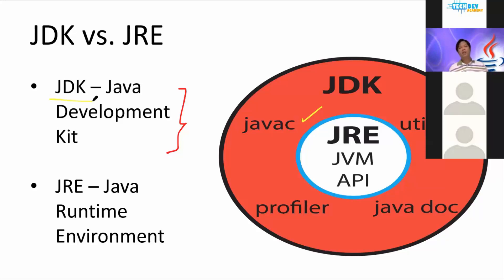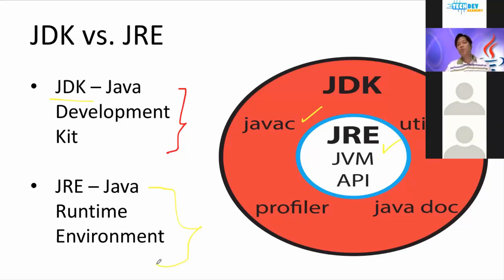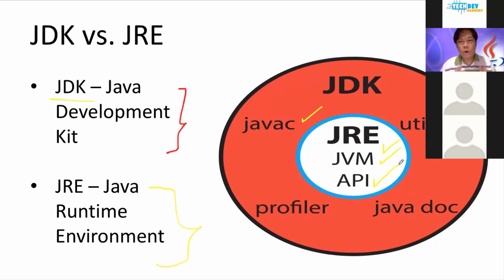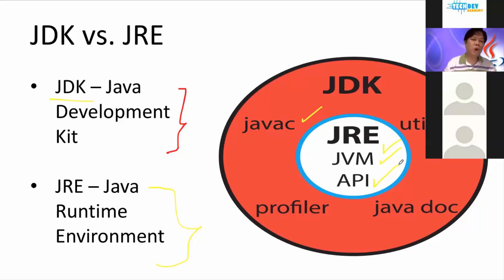If you're not a developer — if you're just an end user — all you need is to install the JRE. The JRE stands for Java Runtime Environment and it only has two components inside: the JVM and the API. For our session today, we don't need to install anything. We just need to have a browser. But if you enroll in the full-blown course, I'm going to teach you how to properly install and configure the Java Development Kit on your machine. For now, we'll just use an online compiler.